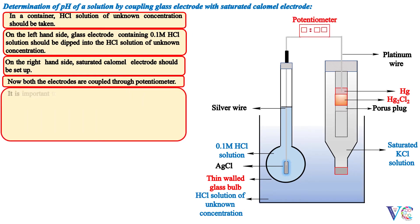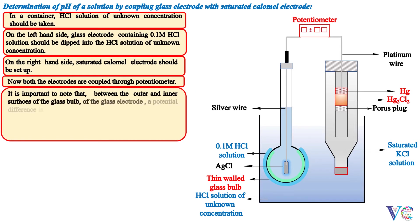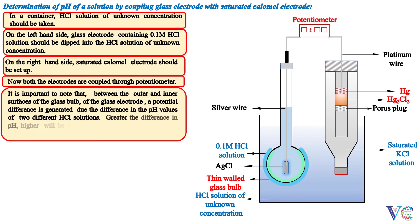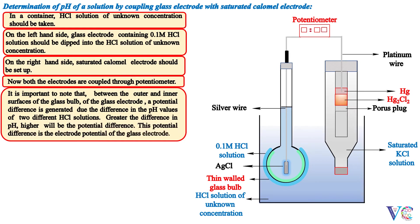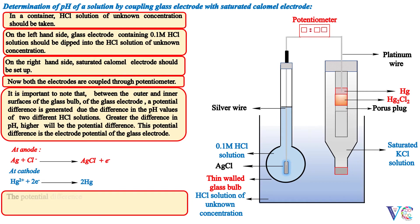It is important to note that between the outer and inner surfaces of the glass bulb of the glass electrode, a potential difference is generated due to the difference in the pH values of two different HCl solutions. Greater the difference in pH, higher will be the potential difference. This potential difference is the electrode potential of the glass electrode. The potential difference developed between the anode and cathode is measured with the potentiometer.